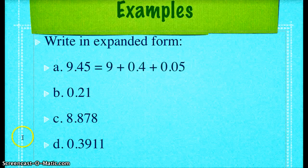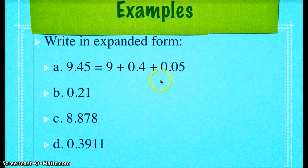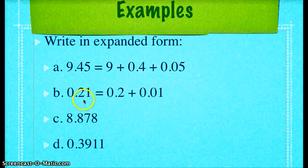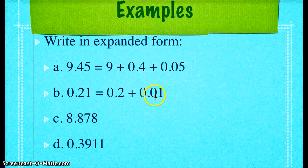Let's go through the answers. 9 and 45 hundredths can be written as 9 plus 4 tenths plus 5 one-hundredths. All of these numbers are in the same place as they were in the original decimal. 21 hundredths can be written as 2 tenths plus 1 one-hundredth. I've replaced the 2 with a zero in the second term.